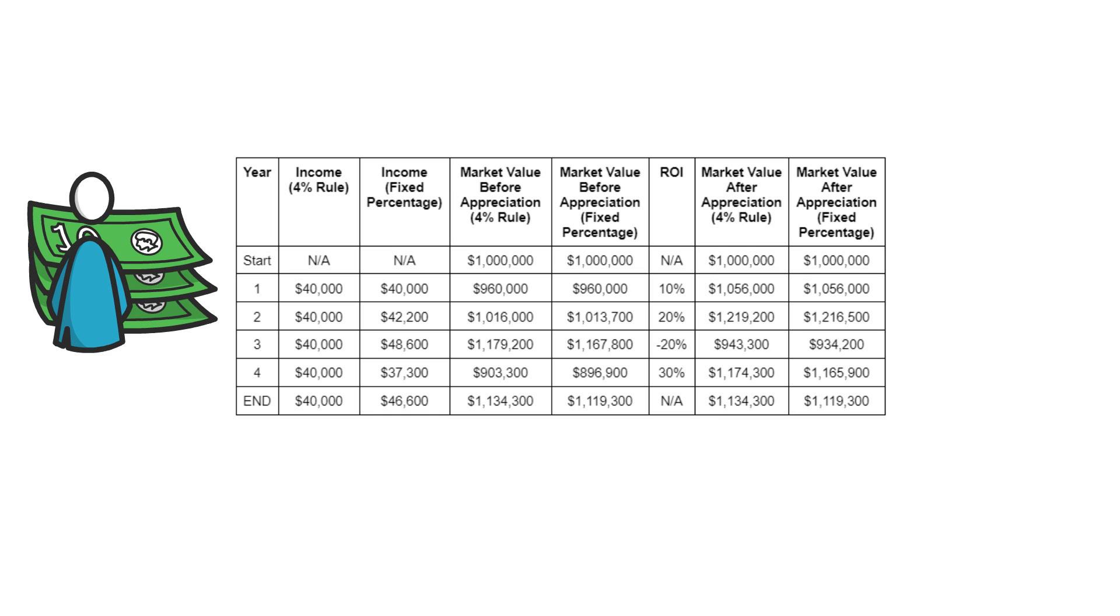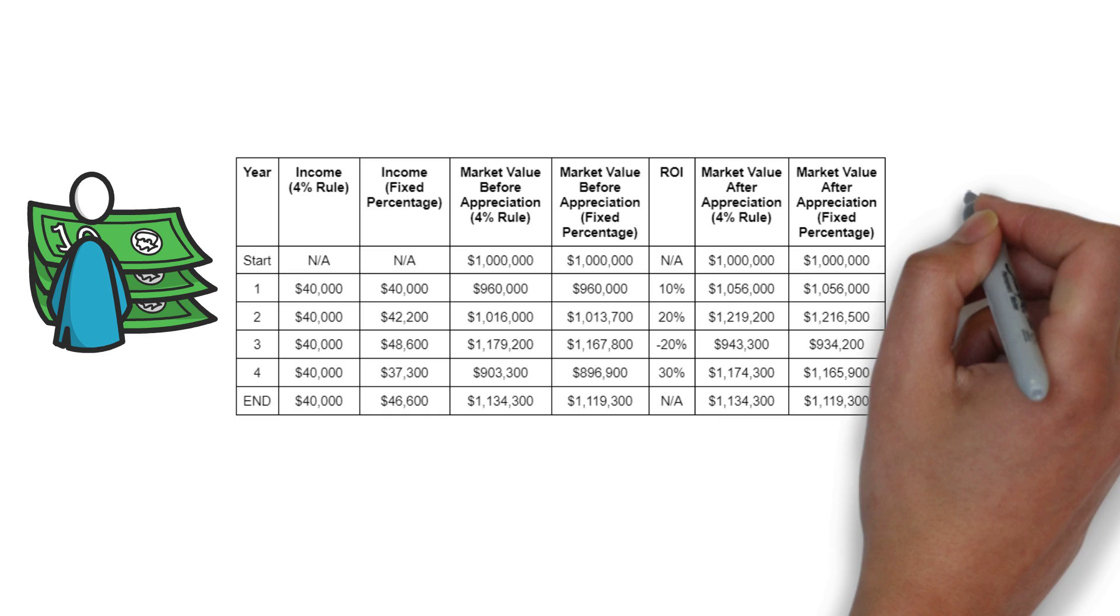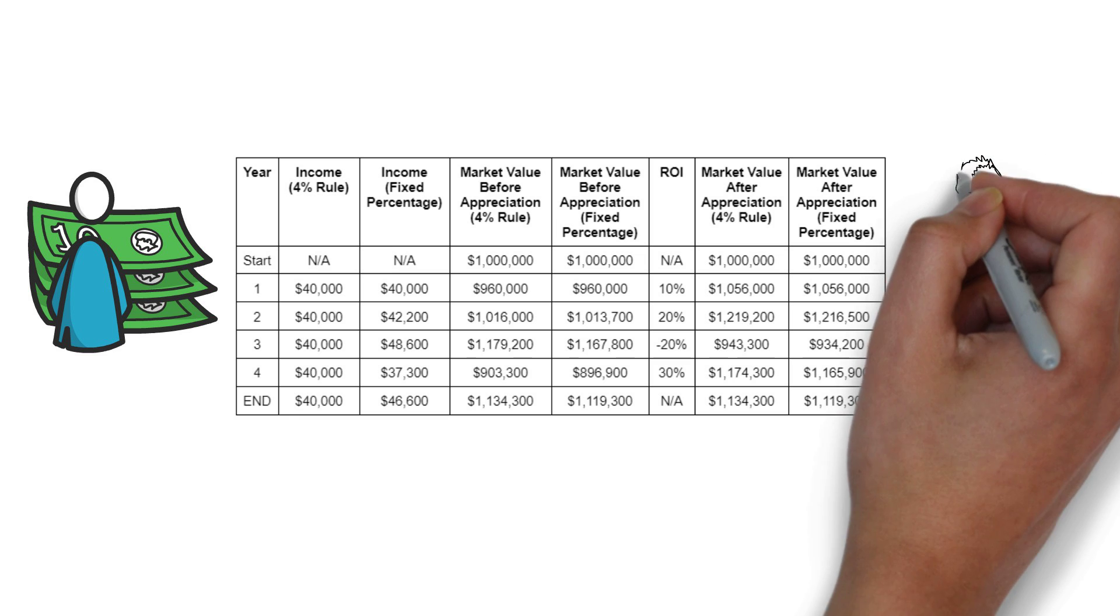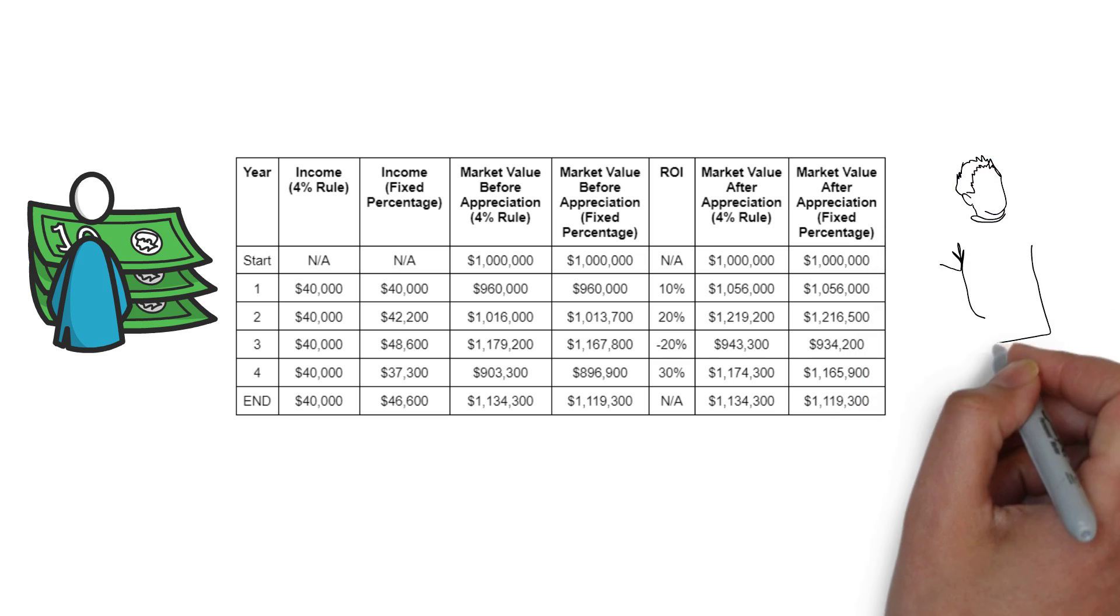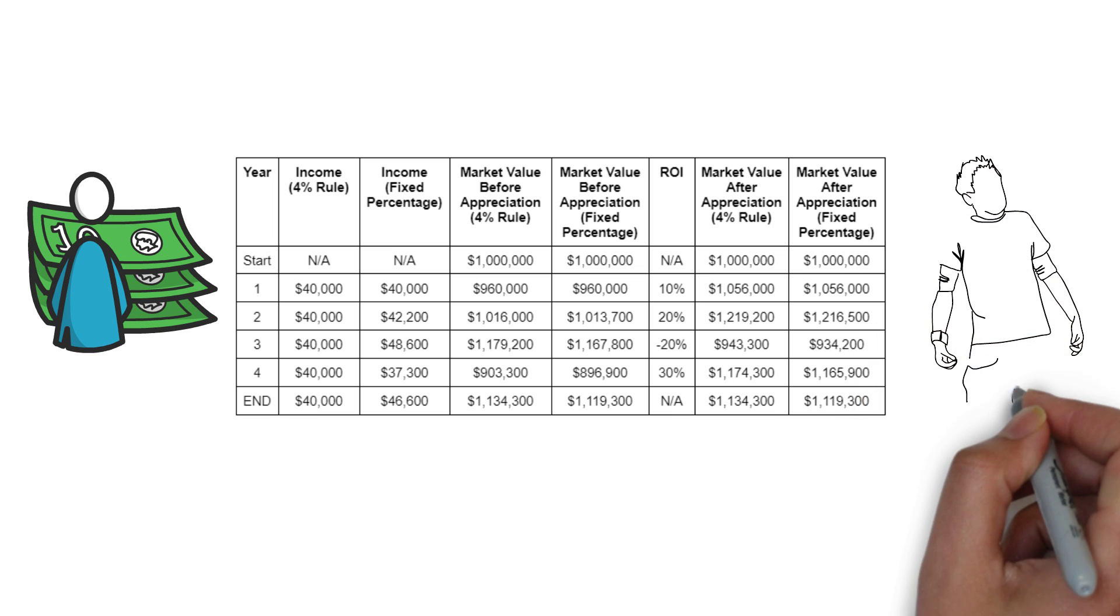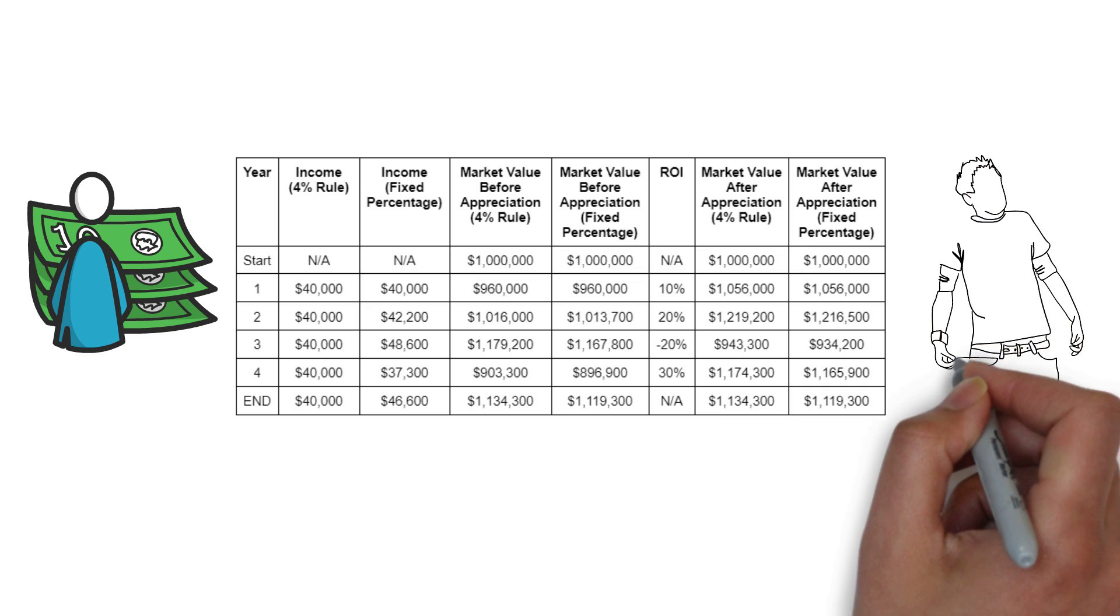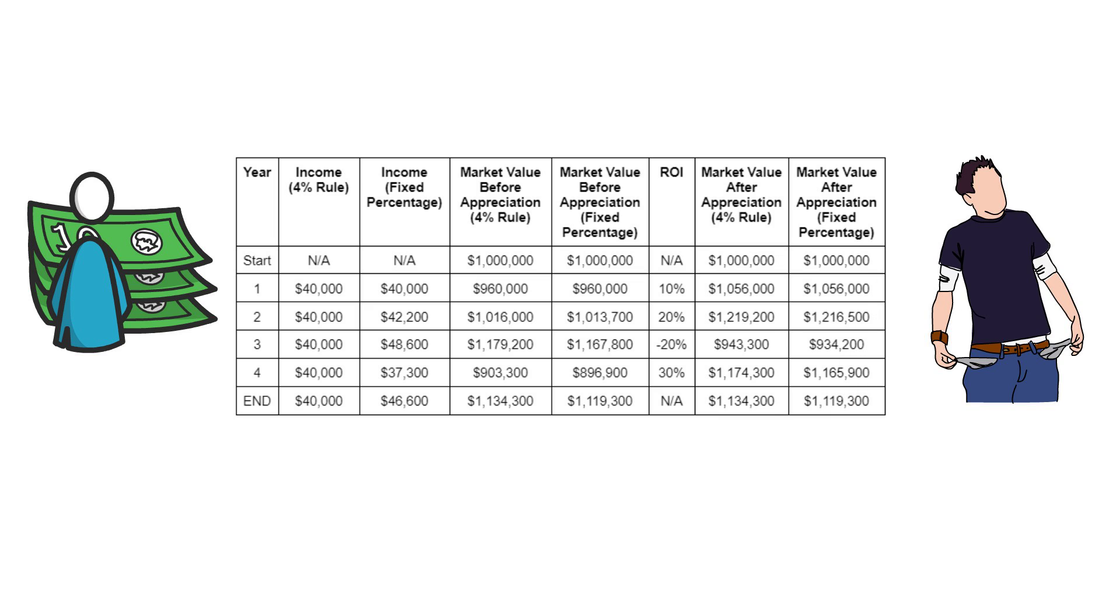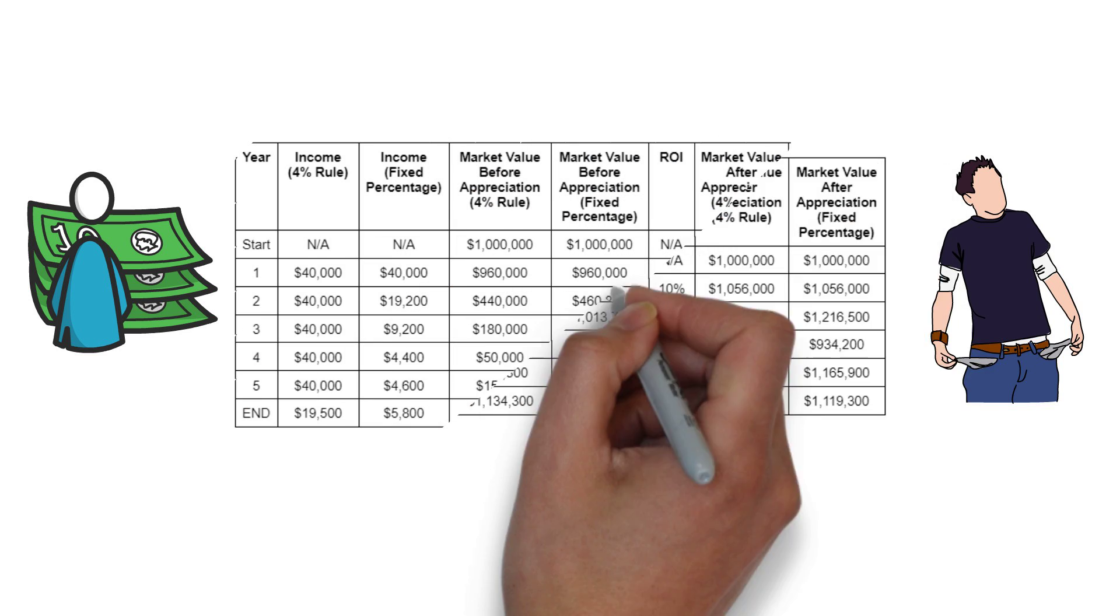Especially if that down market persists for more than a year. The other downside is because the original 4% rule doesn't account for the value of the nest egg after that initial withdrawal is made, it tends to not quite last as long as some other strategies. In other words, the risk of outliving your savings, while not especially high, is higher using the 4% rule than it is with some other strategies. Again, take a look at the fixed percentage strategy for a good example of this.